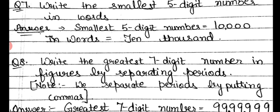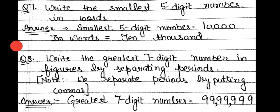Next: write the greatest 7-digit number in figures by separating periods. We separate periods by putting commas, and the greatest 7-digit number is 9 written 7 times: 99,99,999. After every period we put a comma — 99 lakh comma, 99 thousands comma, 999. This is our answer.